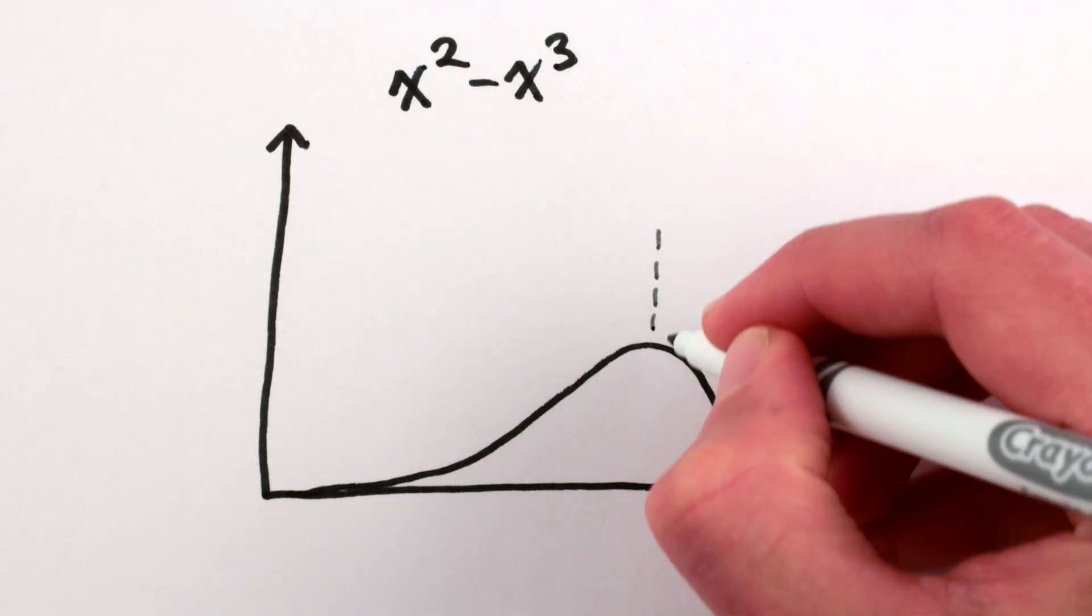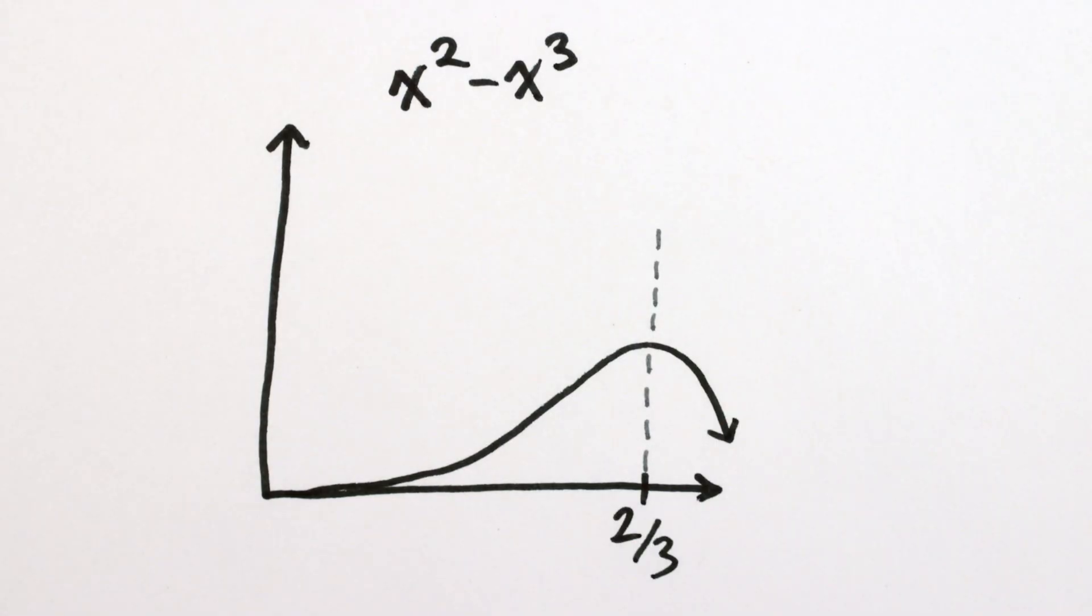For pure cubic and quadratic functions, this equivalence point happens at two-thirds. That's when x cubed starts growing faster than x squared.